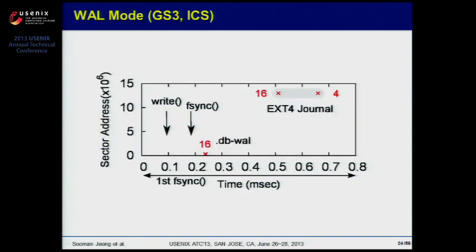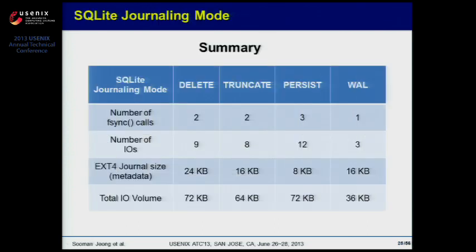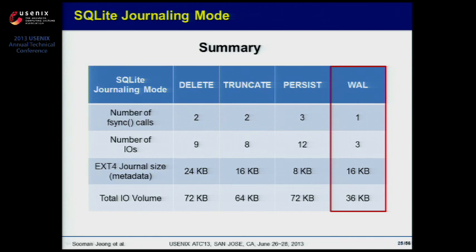The last journal mode is write-ahead logging (WAL). WAL mode logs a record to a .db WAL file and calls only one fsync. Since only one fsync is called, WAL mode creates the fewest write operations among all journaling modes. Out of the four journaling modes, WAL mode shows the least number of fsync calls, I/Os, and smallest total I/O volume. So WAL mode is the best mode.